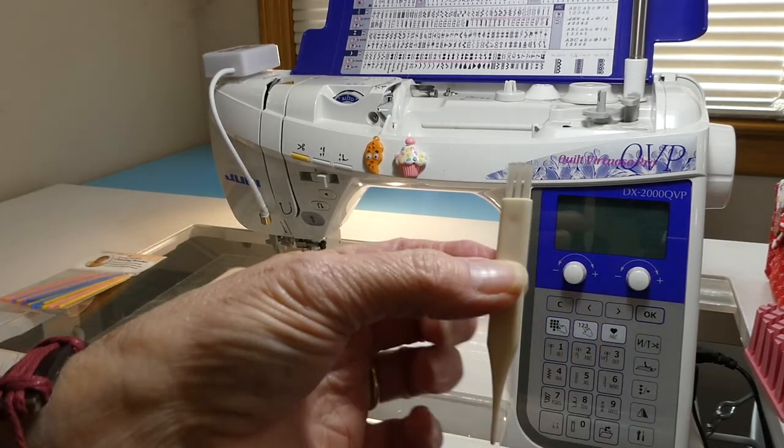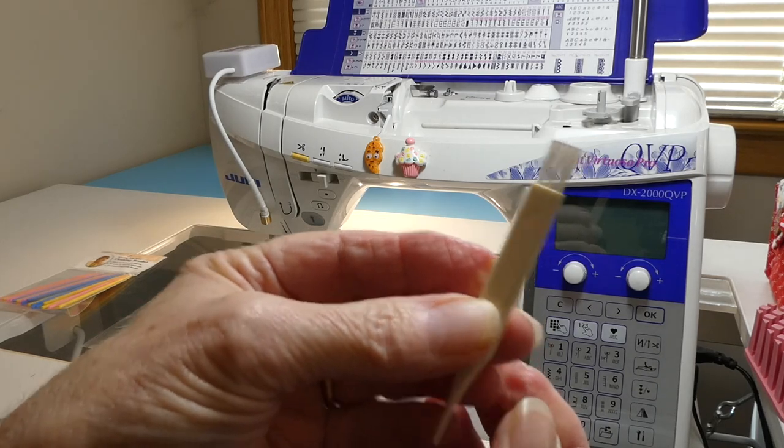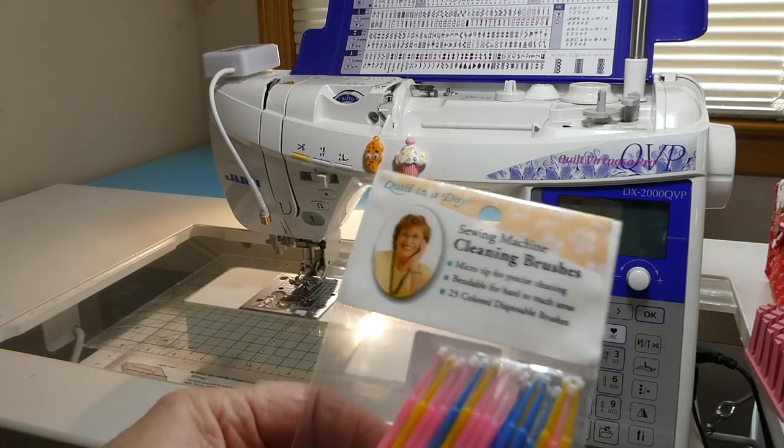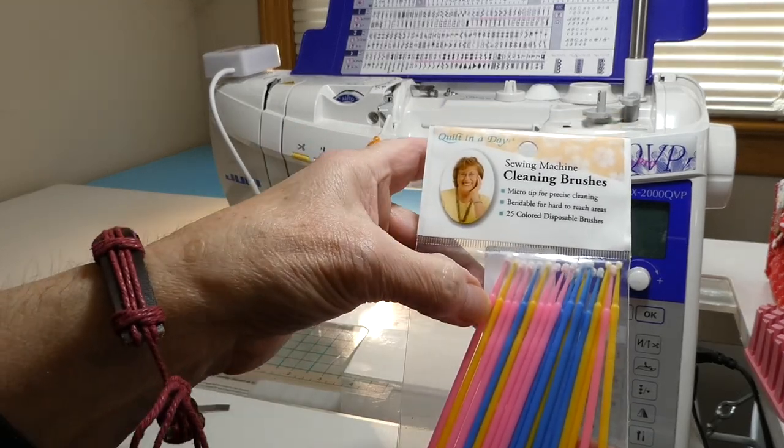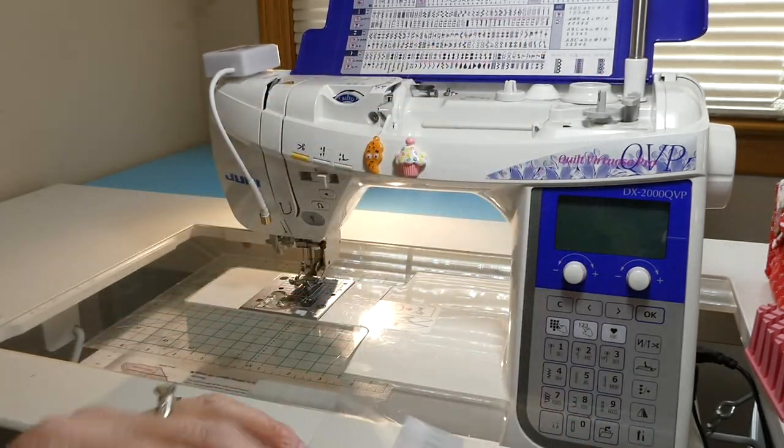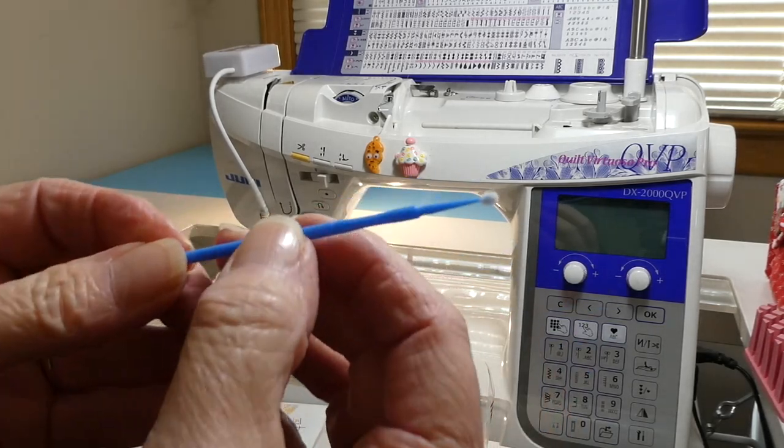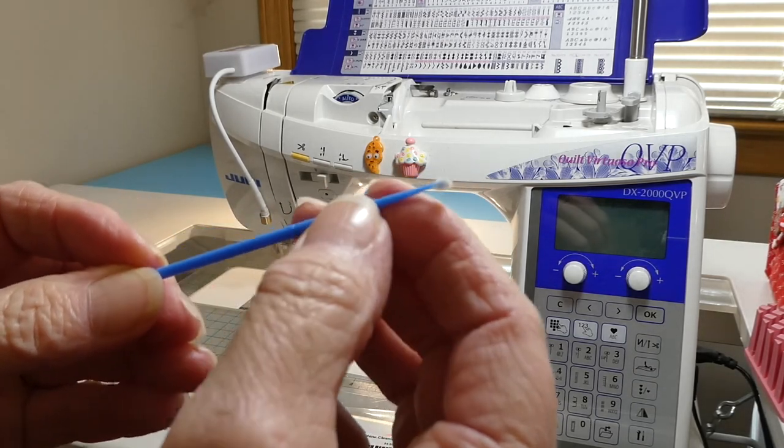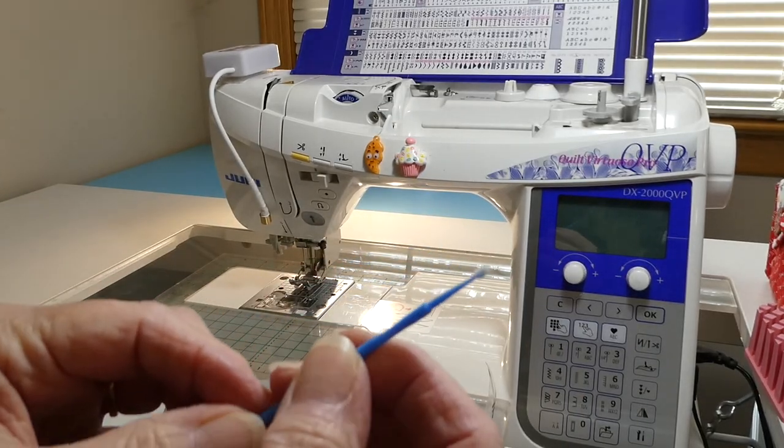You're going to need your little nylon brush. Yours may look different, but all machines come with a little nylon brush. I have these really great micro tip cleaning wands. They're from Quilt in a Day Sewing Machine Cleaning Brushes. They have this really great little micro tipped fuzz gatherer. They fit in small places and they gather fuzz fantastically. So I always use one of these.